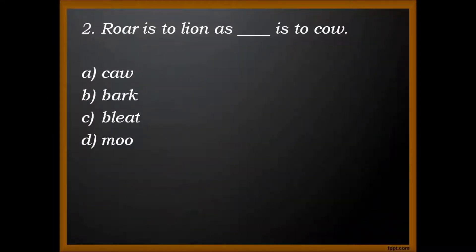Next question. Roar is to lion as dash is to cow. A. Cow. B. Bark. C. Bleat. And D. Moo. The answer is D. Moo.